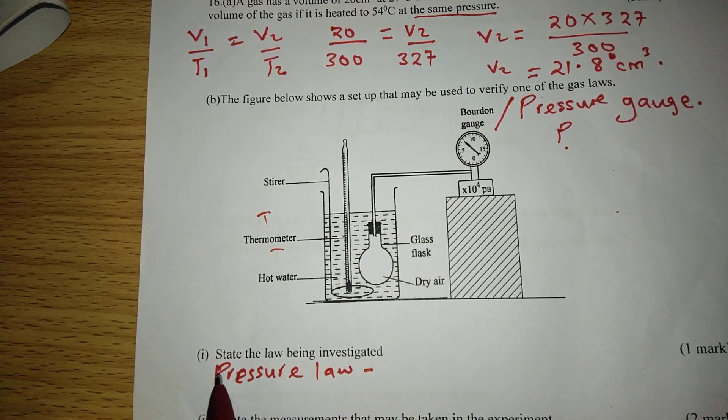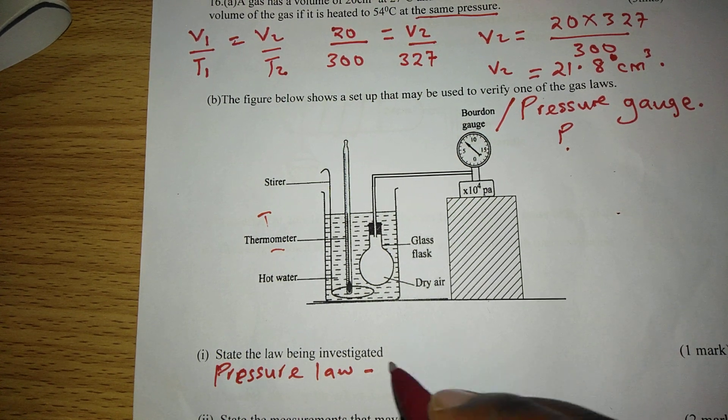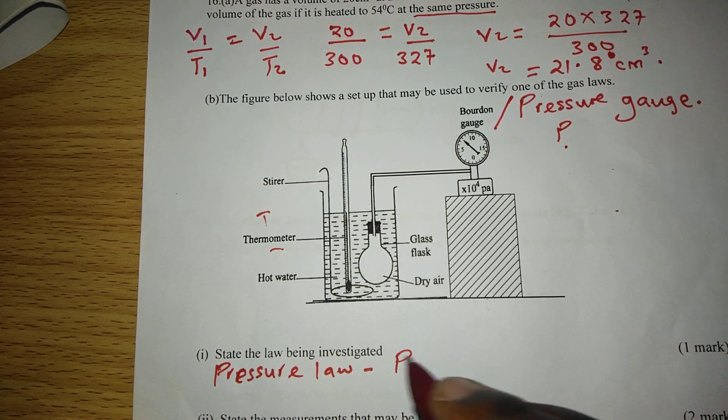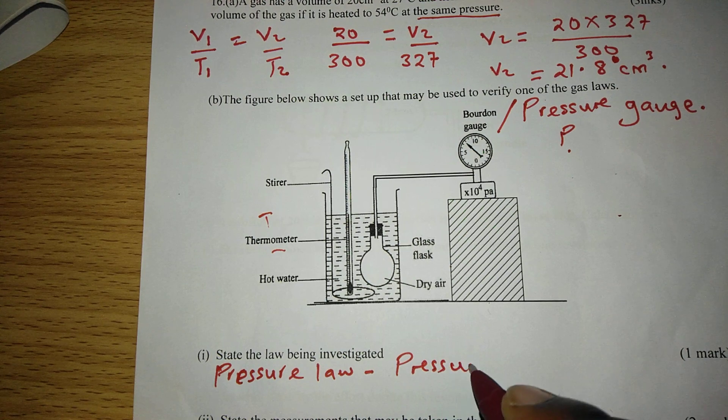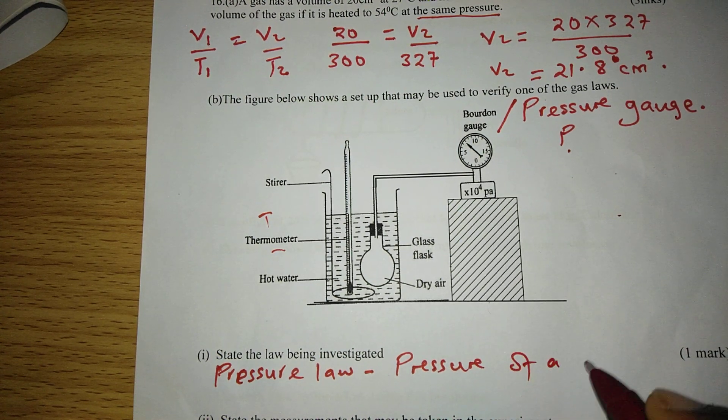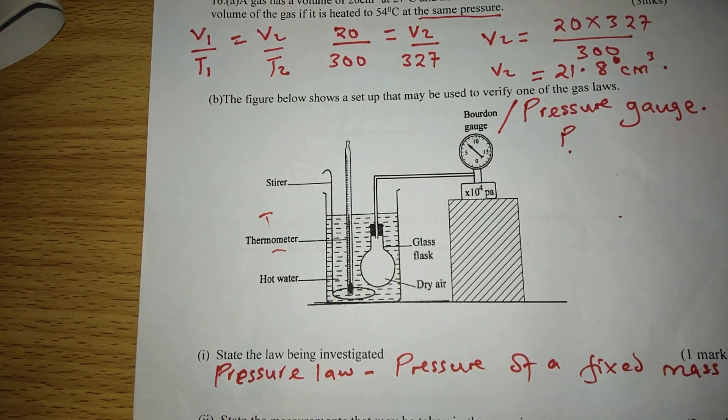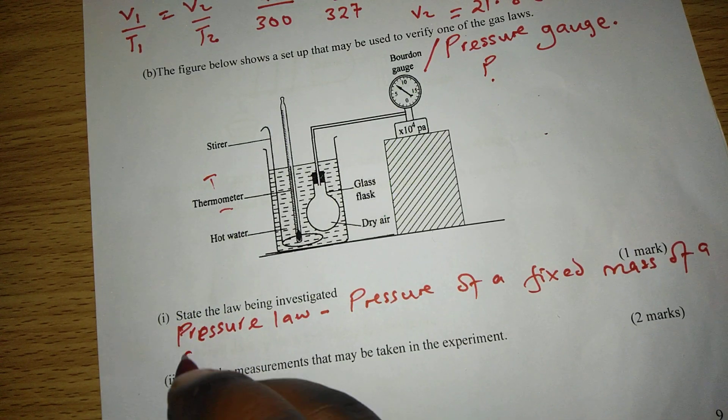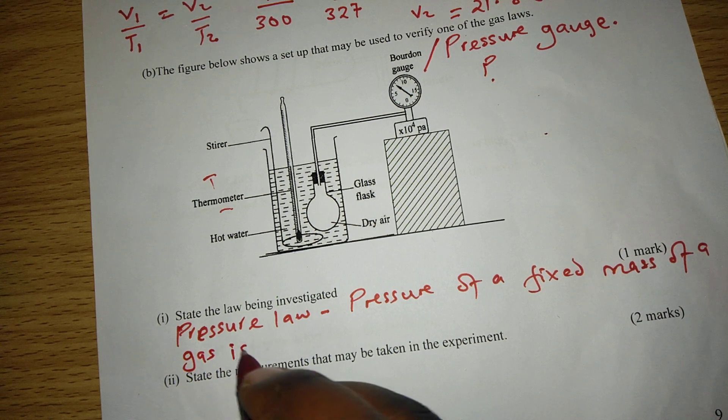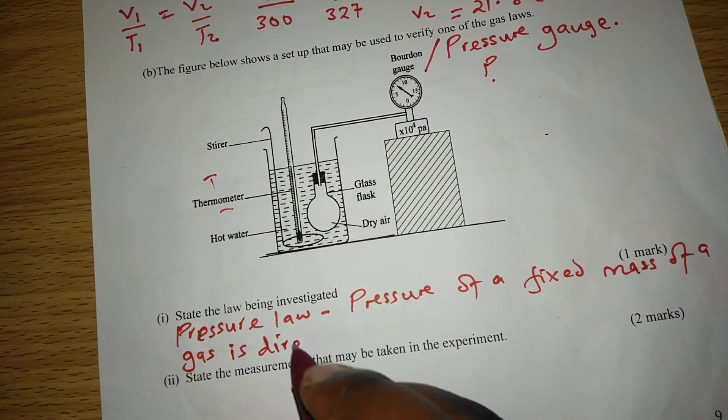Which states that, because we are told to state it, pressure of a fixed mass of a gas is directly proportional to absolute temperature.